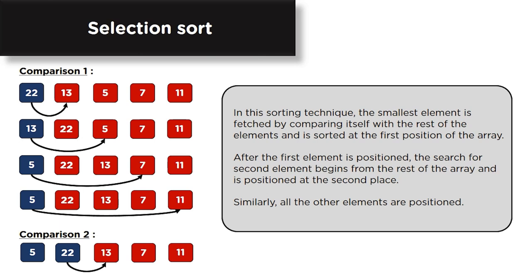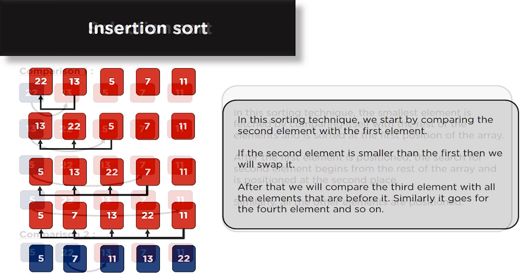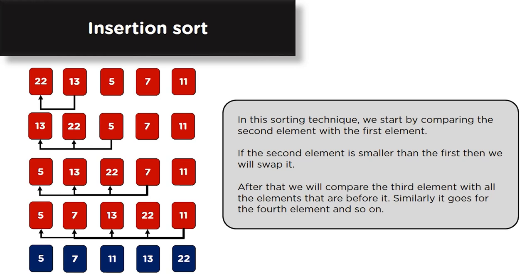In insertion sort, elements are sorted by comparing the second element with the first element. If the second element is smaller than the first, we swap it. After that, we compare the third element with all elements before it. Similarly, it goes for the fourth element and so on. Once all comparisons are done, the elements become sorted.